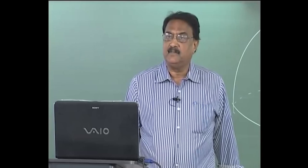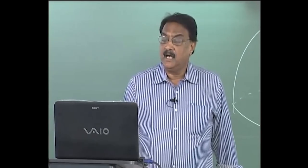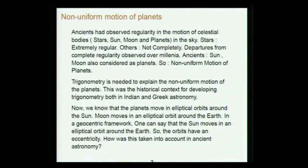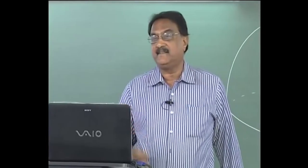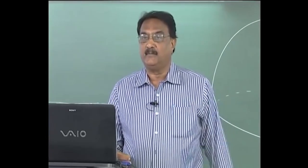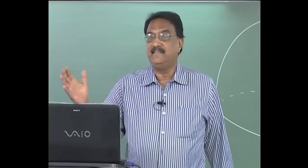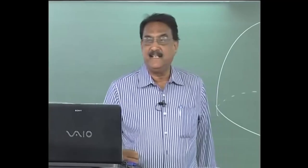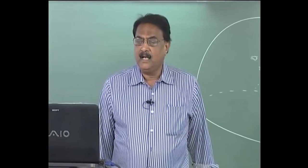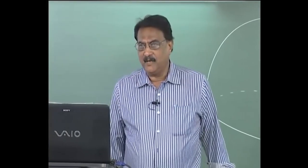Earlier there was not much of mathematical formulation; only for the past 2000 or 2500 years do we have some mathematical formulation. The ancients considered sun and moon also as planets — whatever is moving around the earth as seen from the earth. And what was seen, after long observations over very long periods, was that the motion is not uniform, with varying degrees of non-uniformity.